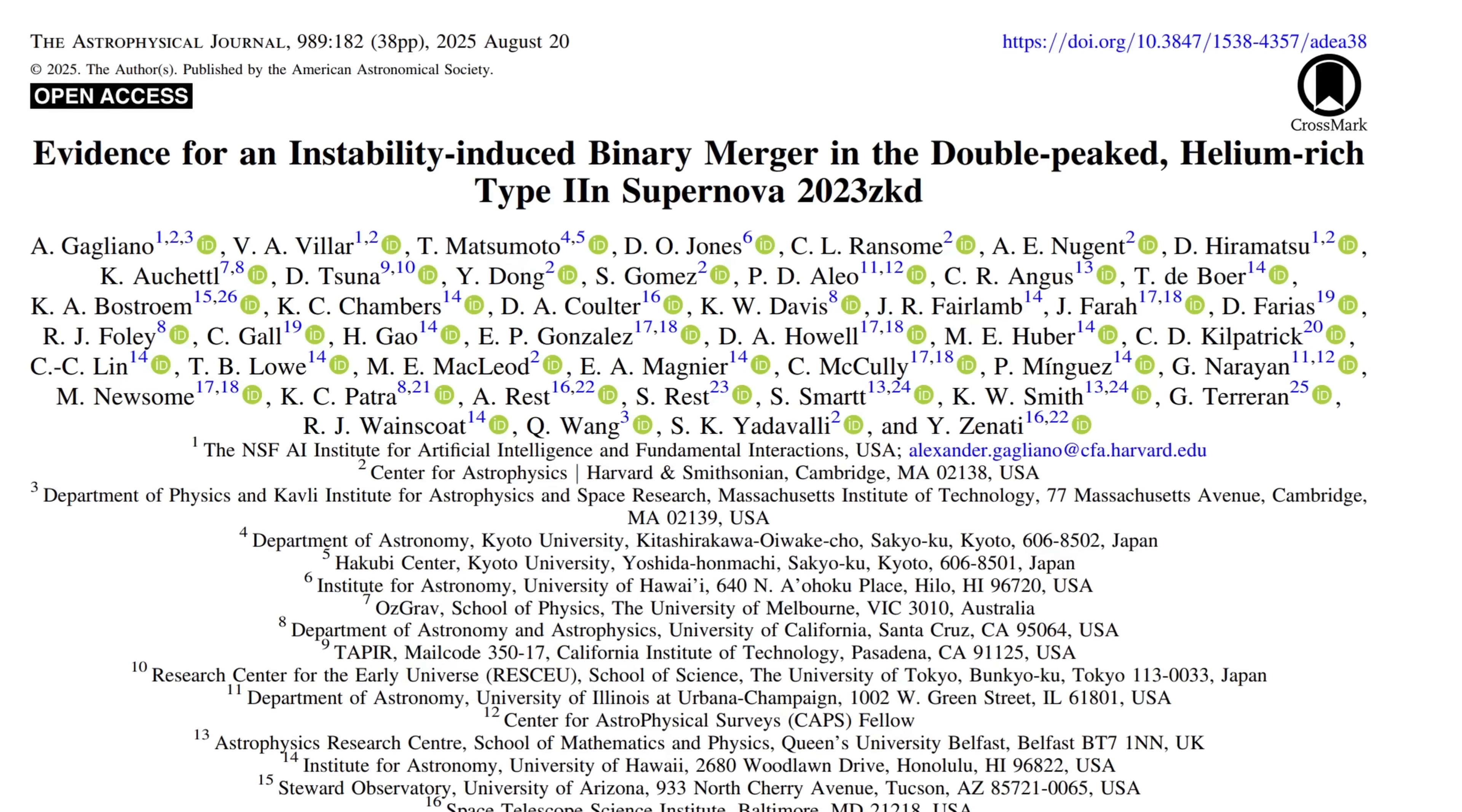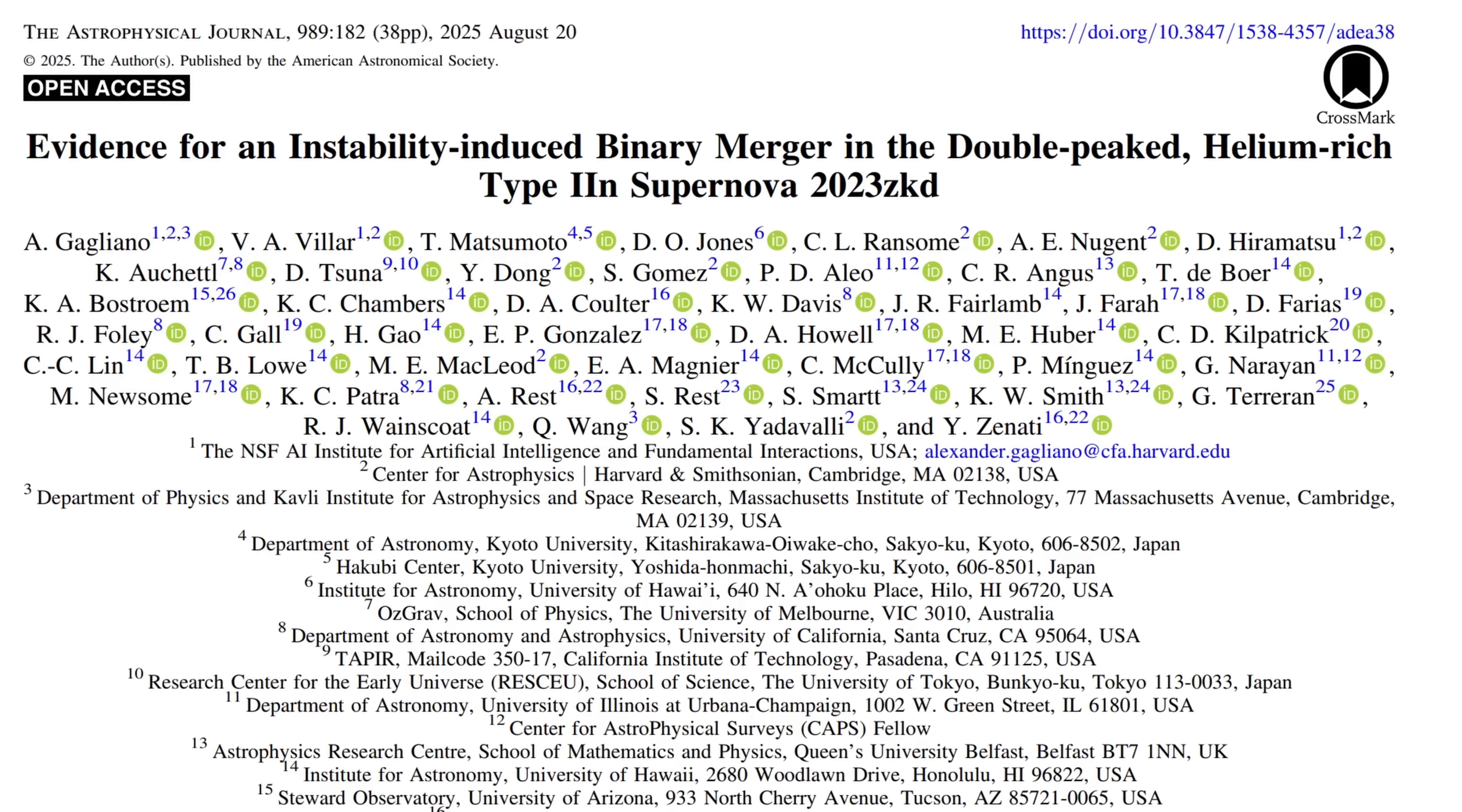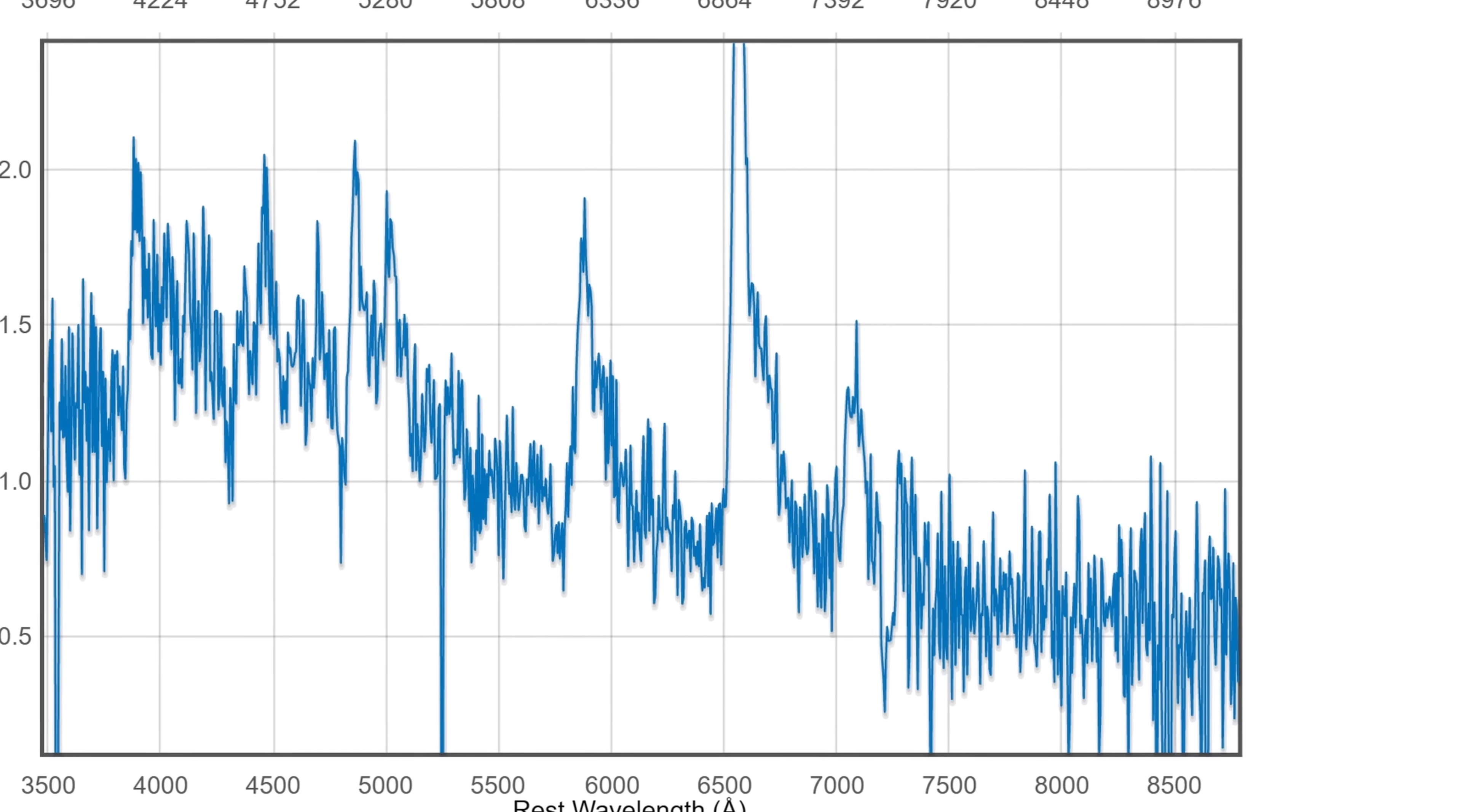Today we're going to discuss yet another unusual supernova discovery that at the moment is somewhat difficult to explain and potentially presents astronomers with a completely new type of supernova we've never seen before. An extraordinary astronomical event reported in this study, currently referred to as SN2023ZKD, that after months of investigations presented astronomers with a lot of unexpected discoveries, very likely suggesting a brand new type of explosion triggered by a dramatic interaction between a very massive star and a black hole.